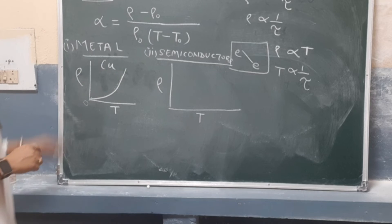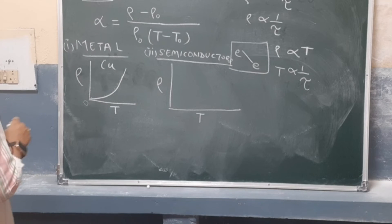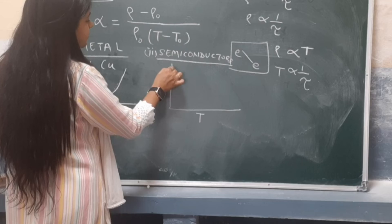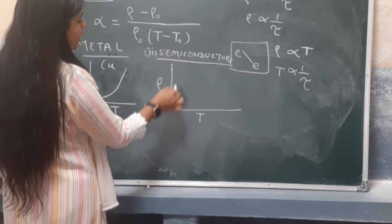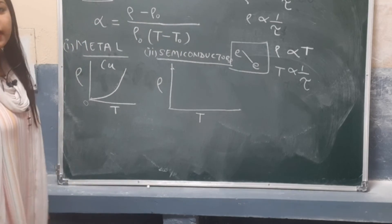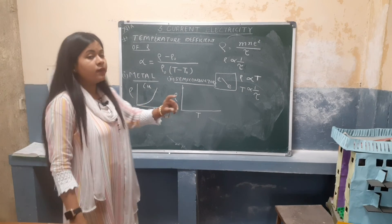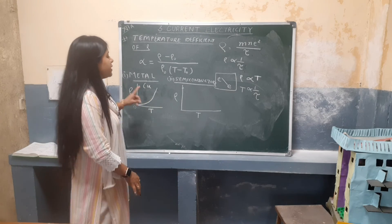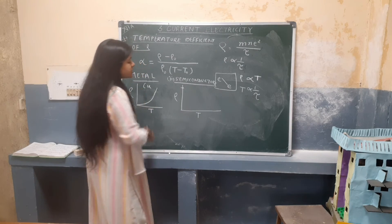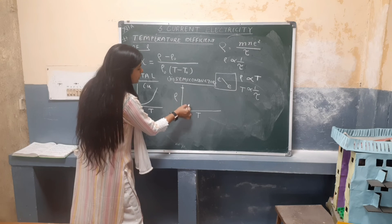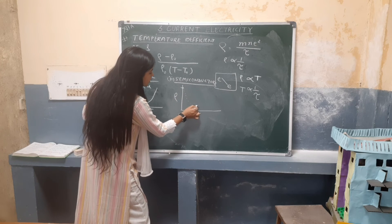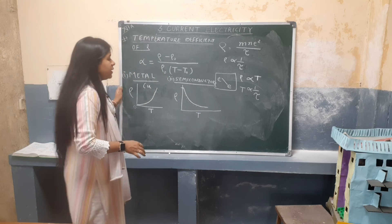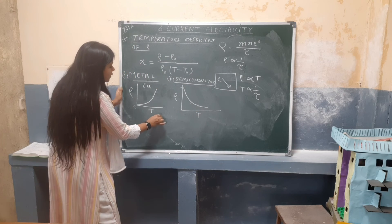For semiconductors, which we will study in detail in Chapter 14: semiconductors behave as insulators at zero temperature and become conductors at room temperature or higher. So for semiconductors, when temperature is zero, resistivity is high; as temperature increases, resistivity decreases. This is the graph for semiconductors.